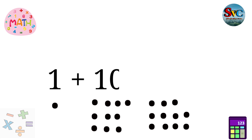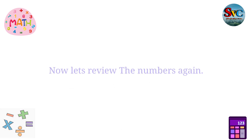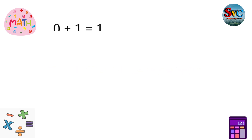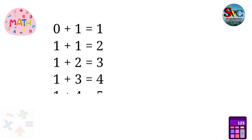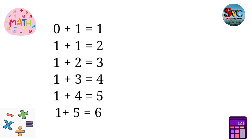1 plus 10 is equal to 11. Now let's review the numbers again. 0 plus 1 is equal to 1. 1 plus 1 is equal to 2. 1 plus 2 is equal to 3. 1 plus 3 is equal to 4. 1 plus 4 is equal to 5. 1 plus 5 is equal to 6.